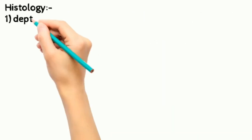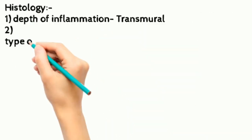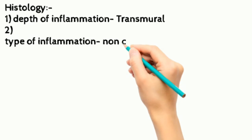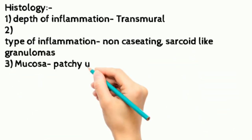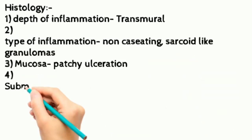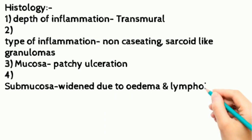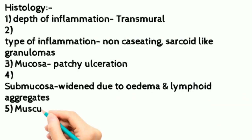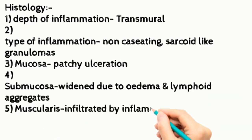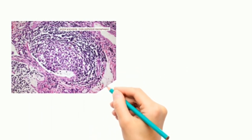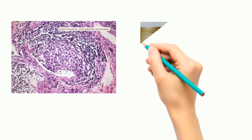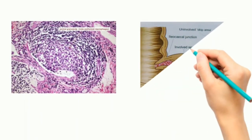As you can see in the diagram, there is a cobblestone-like intestinal surface with fissures and a thickened wall. Regarding histology, the depth of inflammation is transmural. The type of inflammation involves non-caseating, sarcoid-like granulomas. The mucosa shows stellate ulceration, the submucosa is widened due to edema and lymphoid infiltration, the muscularis shows inflammatory cells, and fibrosis is present.